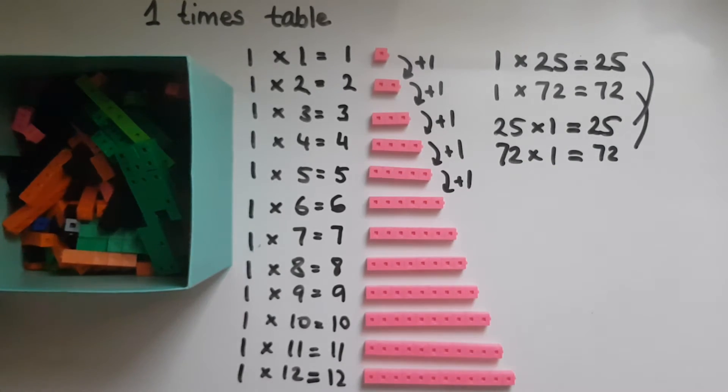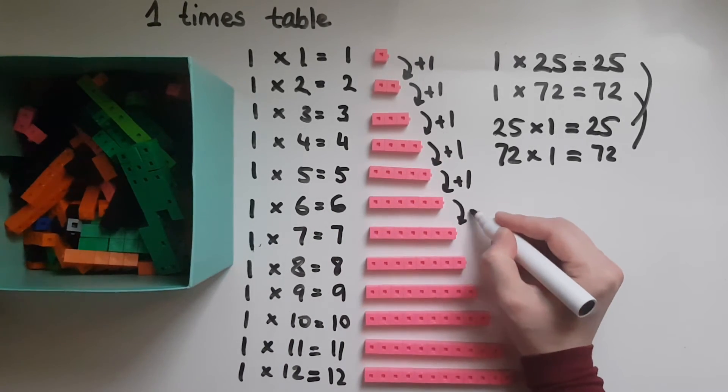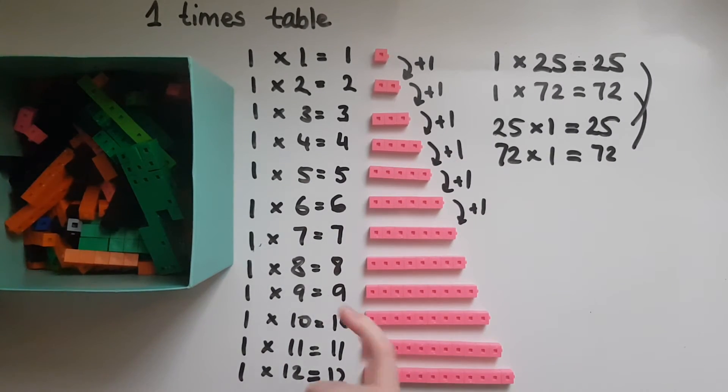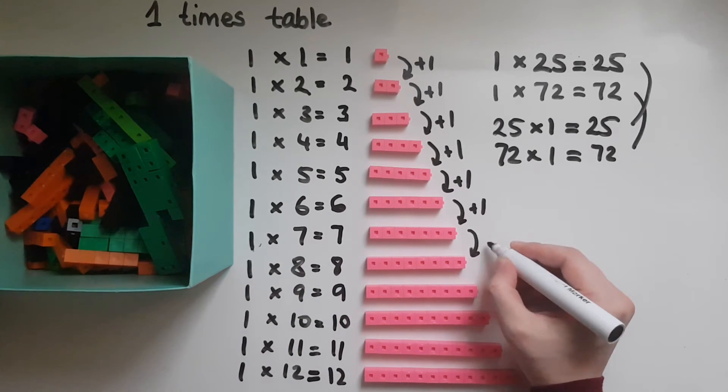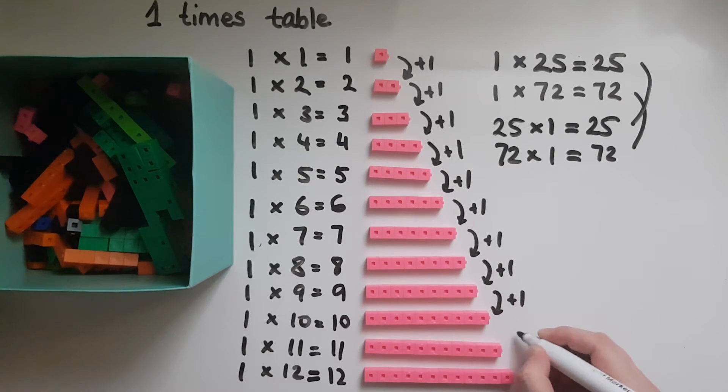So we'll add one here as well. So one times six is six. If I add another one, that's going to give me seven, which is one times seven or seven times one. So you can see that it's the same throughout this.